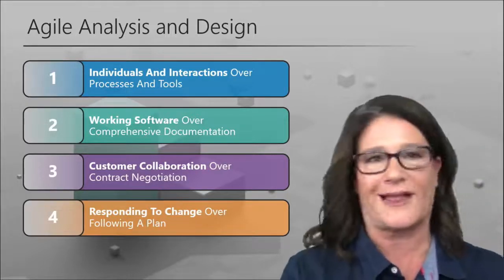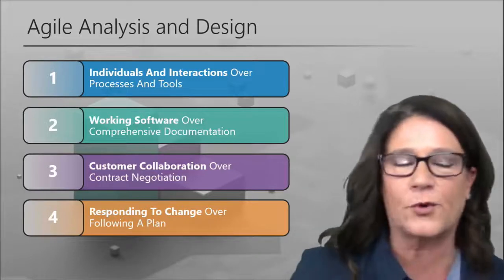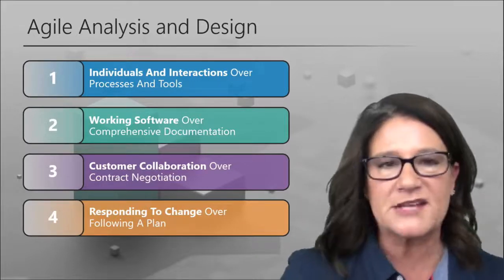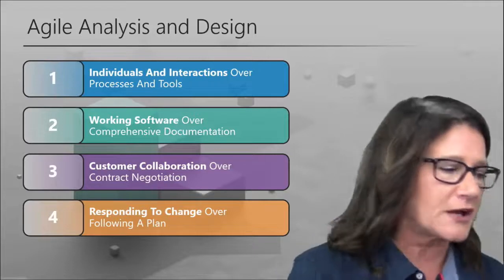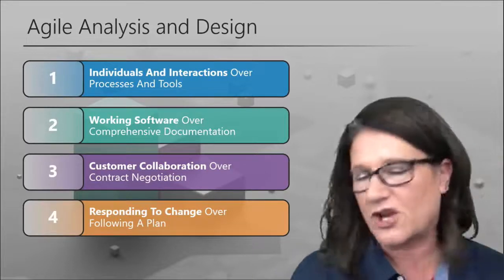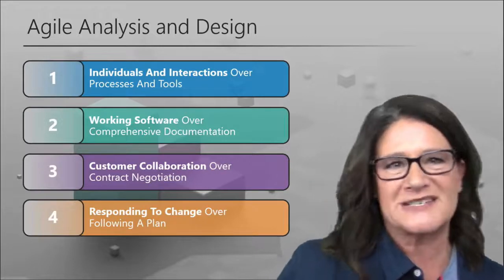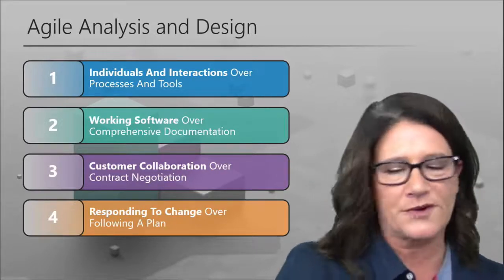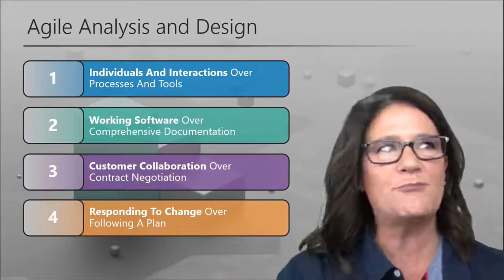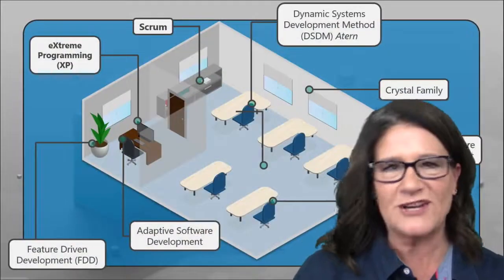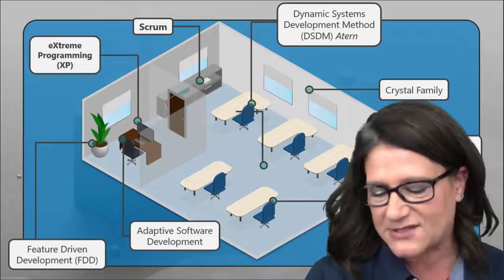A lot of what we talk about in the ACP class are things like: 'My stakeholders don't get it — where's my baseline? How do I answer this question? How do I be Agile?' You don't necessarily need to do Agile, but how do you practice agility? A lot of the frameworks — like Scrum and Extreme Programming — are the frameworks we talk about in the ACP class.